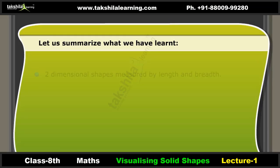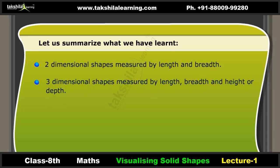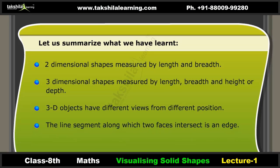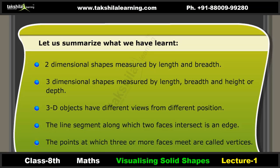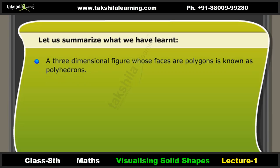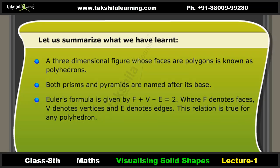In summary: two-dimensional shapes are measured by length and breadth, while three-dimensional shapes are measured by length, breadth and height or depth. 3D objects have different views from different positions. An edge is the line segment along which two faces intersect; vertices are the points where three or more faces meet. A three-dimensional figure whose faces are polygons is a polyhedron. Both prisms and pyramids are named after their bases. Euler's formula is F + V − E = 2, where F denotes faces, V denotes vertices and E denotes edges — this relation is true for any polyhedron.